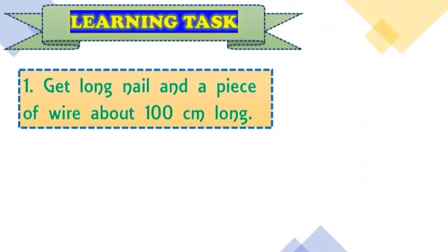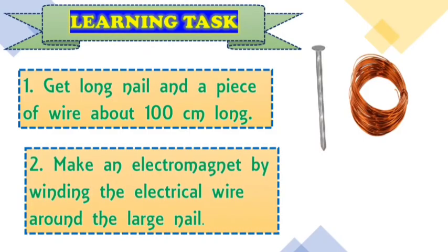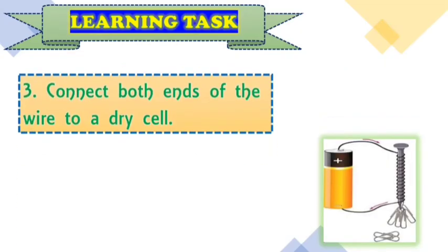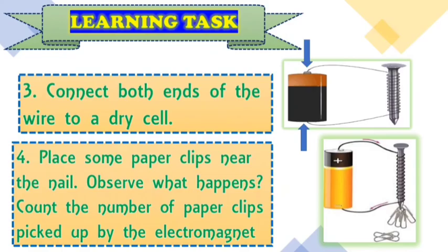The first one is to get long nail and a piece of wire about 100 cm long. Number two, make an electromagnet by winding the electrical wire around the large nail. This means you will wind the wire around it. Number three is to connect both ends of the wire to a dry cell. Extend it and connect to the negative part and then the positive part of the battery. And number four is to place some paper clips near the nail. Now you're ready to see if your electromagnet is strong. Observe what happens.